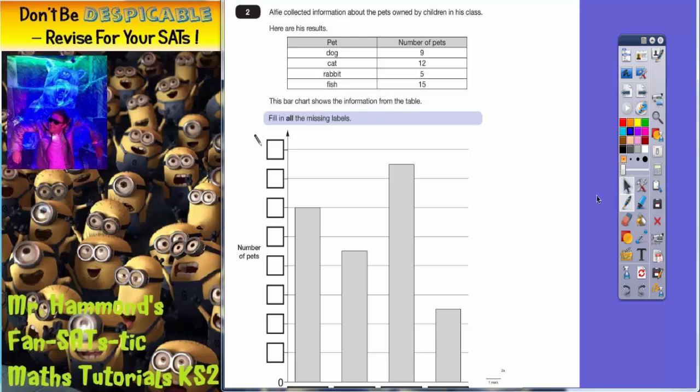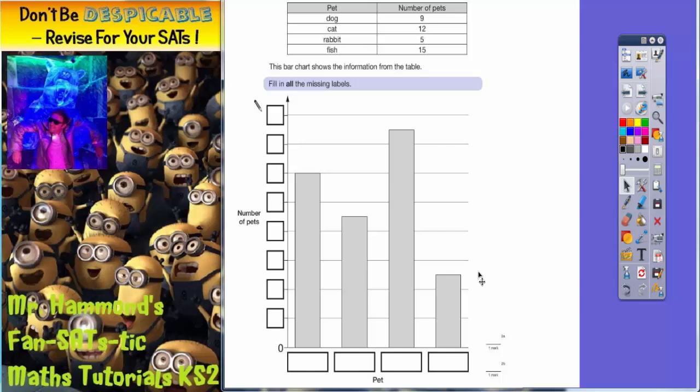Fill in all the missing labels. Now the first thing to notice is that there are lots of missing things from the bar chart. We do have the bars already drawn, we've got hardly any numbers up the side except for this zero.